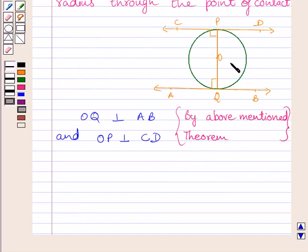Now we know angle OQA is equal to 90 degrees or we can say angle PQA is equal to 90 degrees. Now angle PQA is equal to 90 degrees implies AB is perpendicular to PQ.